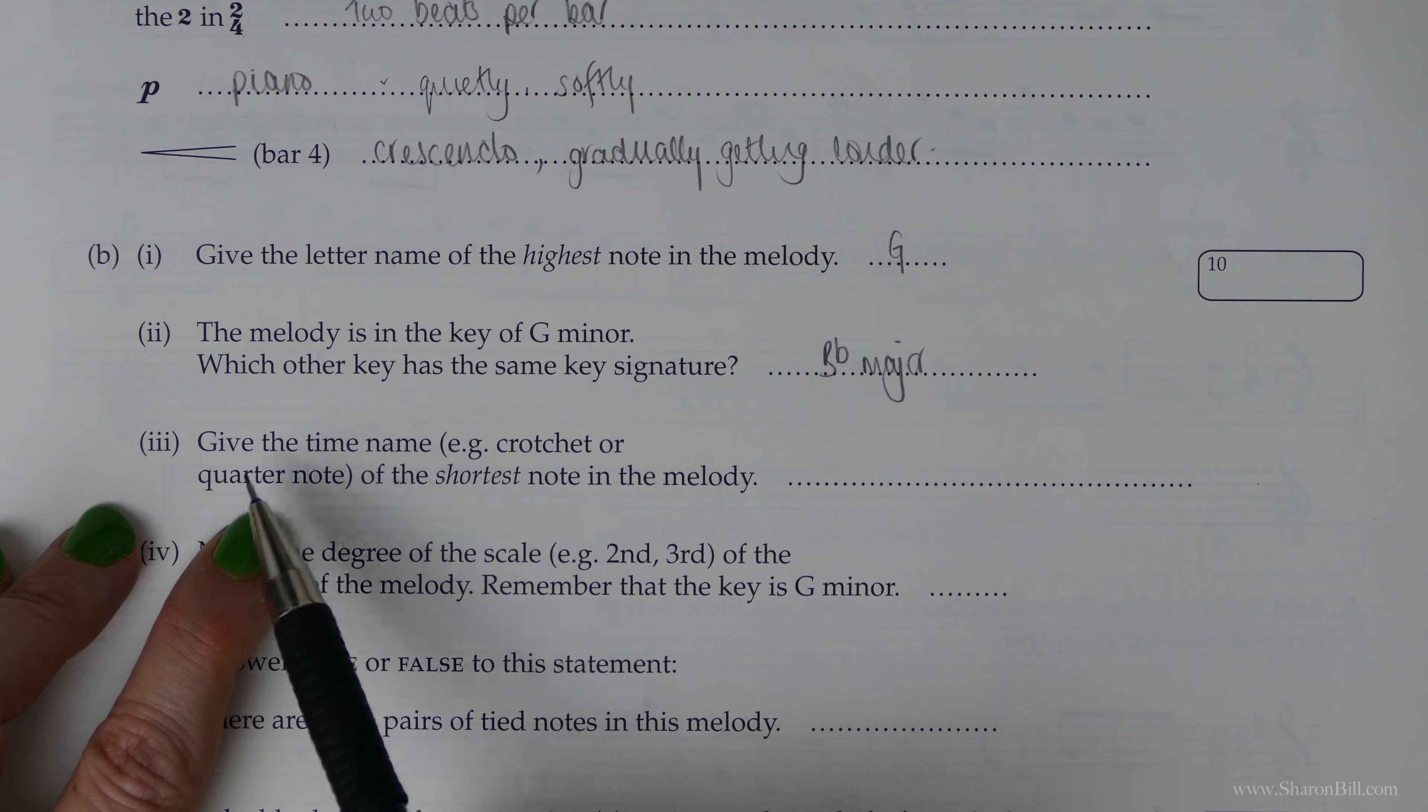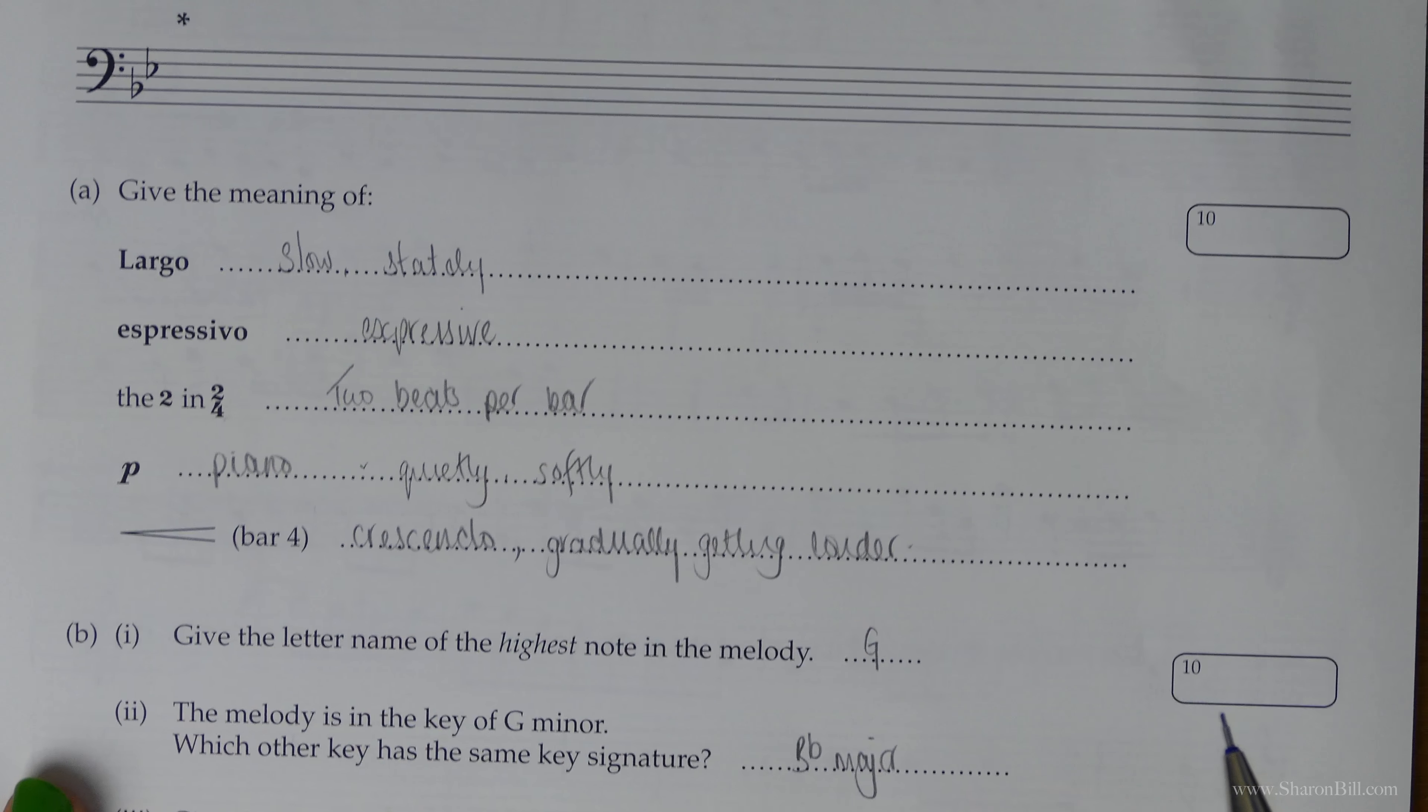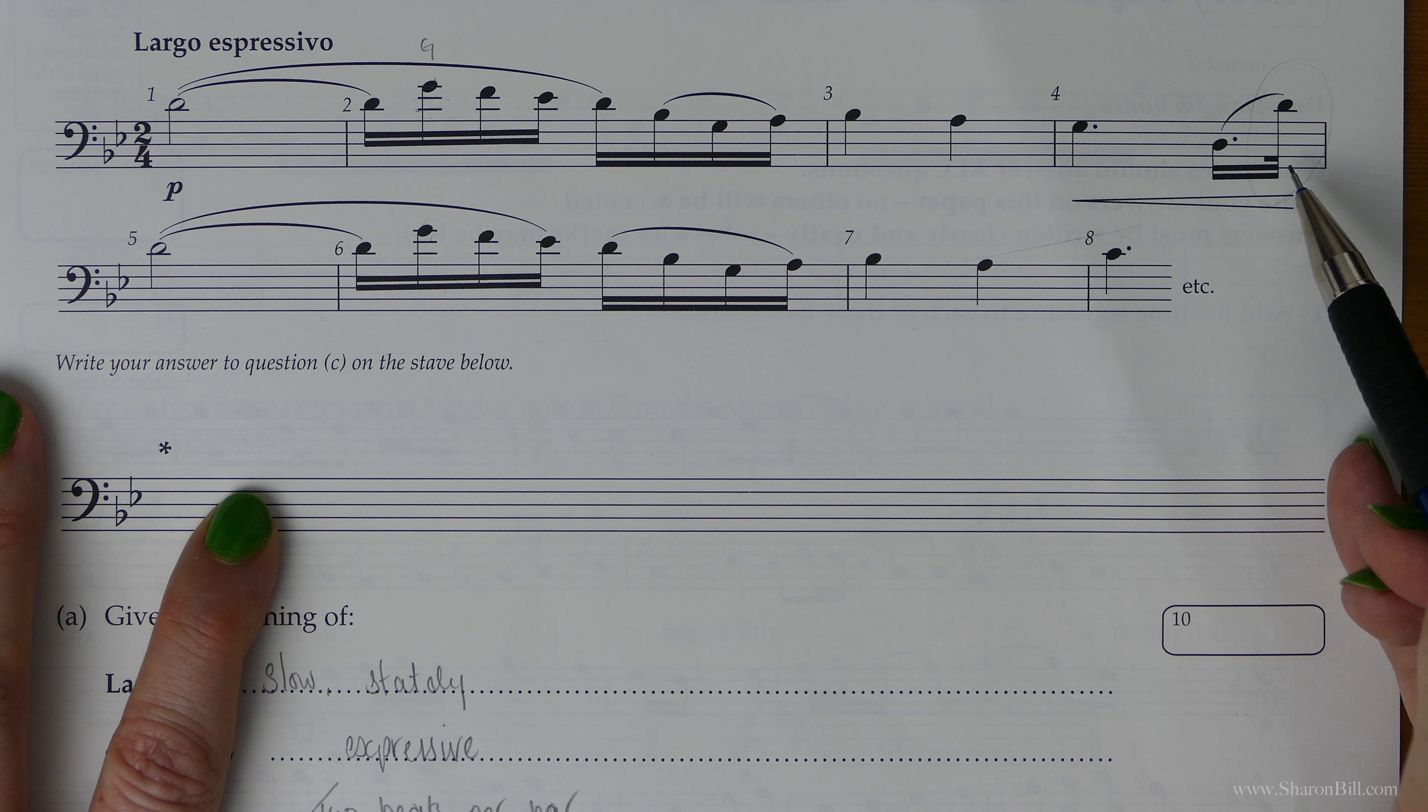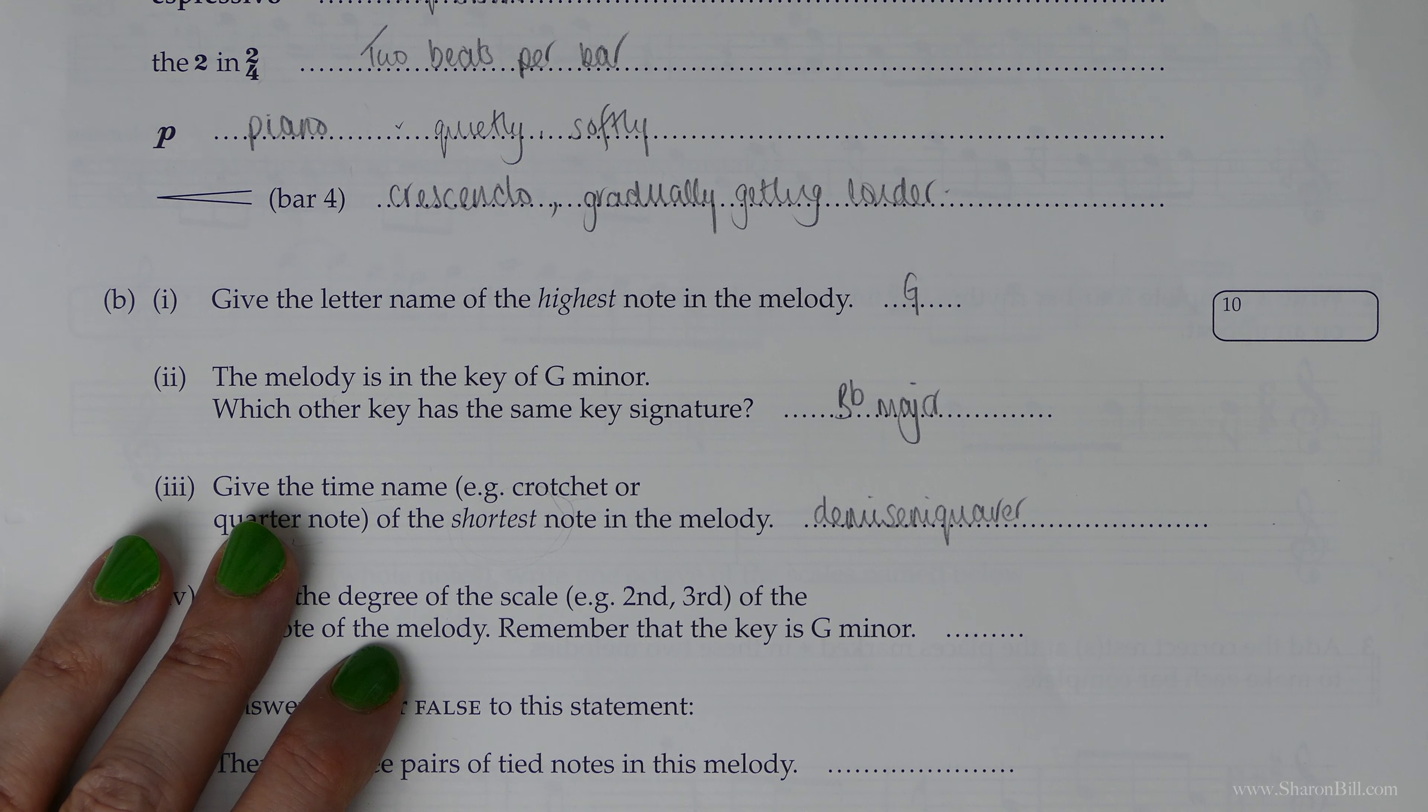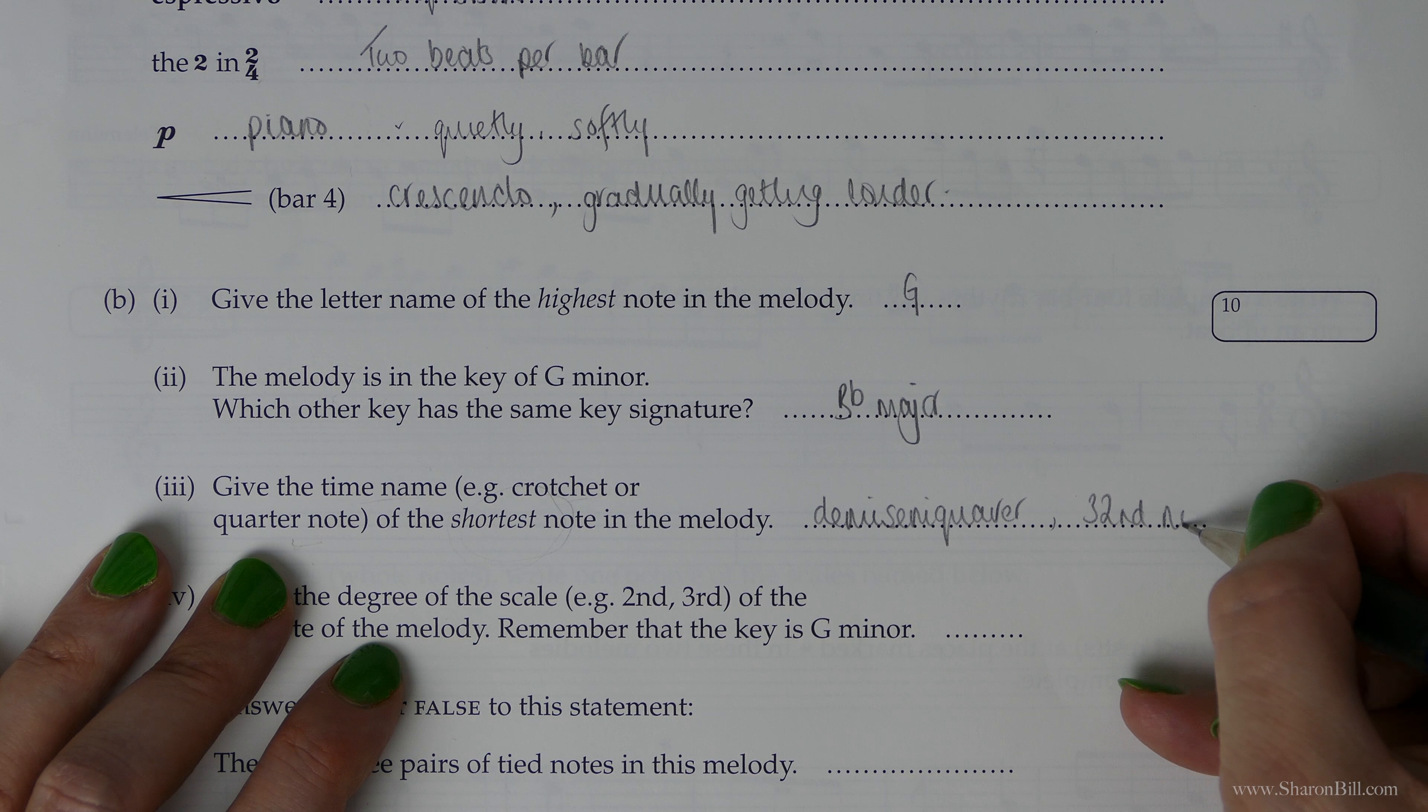Next one: give the time name, whether you say crotchet, quaver or quarter note, eighth note—just stick to your definition terms. We need to explain the shortest note in the melody. If we just glance ahead, whilst there's lots of these semiquavers or sixteenth notes, you'll see that this one is the shortest. And this is a demi-semiquaver, or if you use the American or pop terms, a semiquaver is a sixteen so this will be thirty-second note.